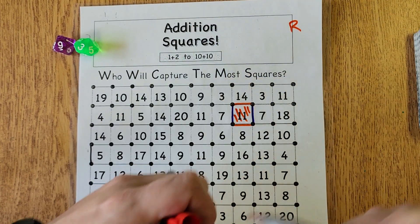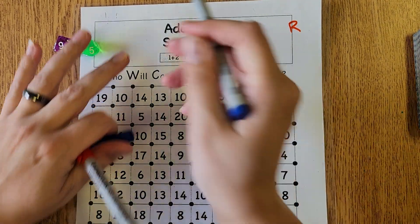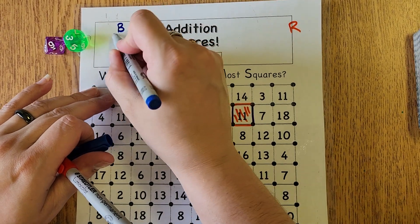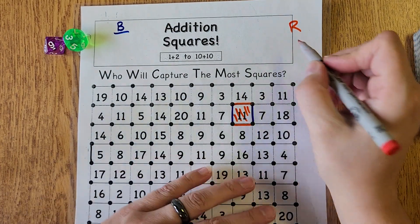So we have red player and blue player. Red player gets to collect one point.